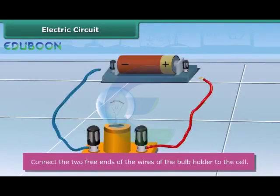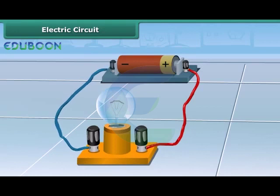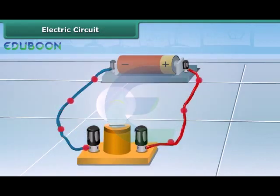Finally, connect the free end of one wire to the positive terminal of the cell and the free end of the other wire to the negative terminal of the cell. This may be done with the help of a rubber band or an adhesive tape. After the connection, you can see that the bulb lights up.